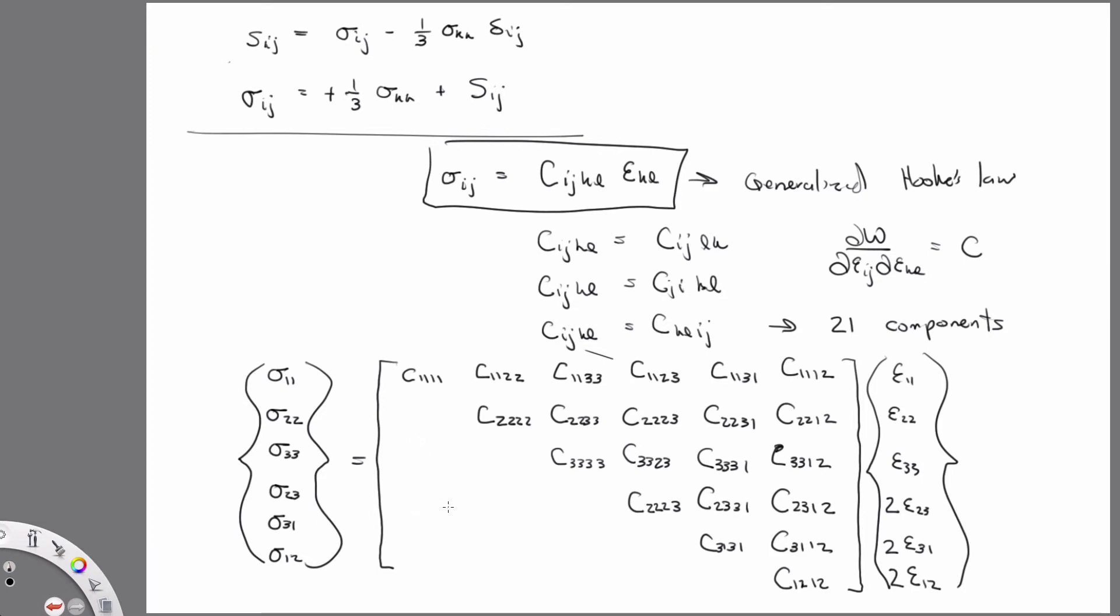And so the rest is symmetric. And those, if you count them, that's your 21 components. So those are 21 unique components. And, you know, we write this as Voigt notation. Here we write this as a stress vector, and this is a matrix, and this is a strain vector. And this type of material is called a triclinic material.